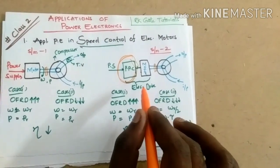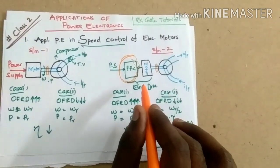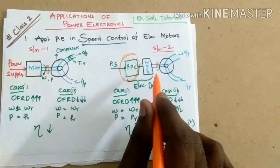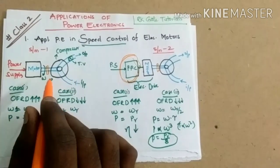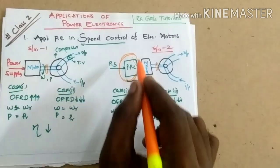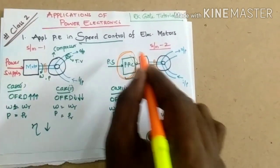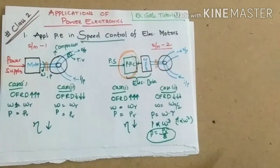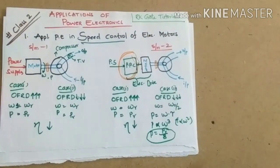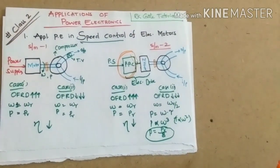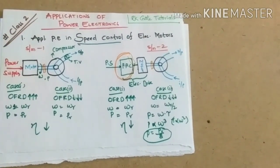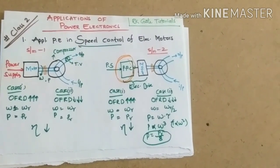So our conclusion here is that system 2 is more efficient than system 1 due to the presence of the power processing circuit, which is nothing but power electronics. I hope you understand. Let us go to the second application.